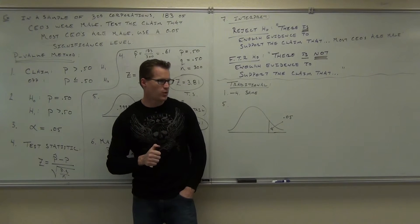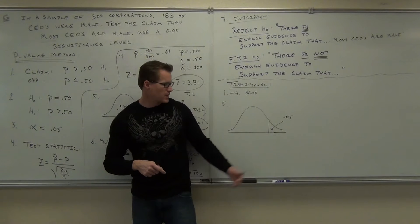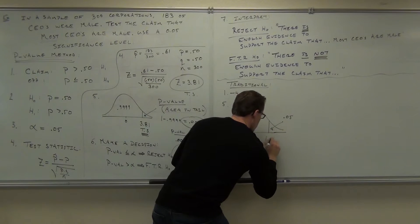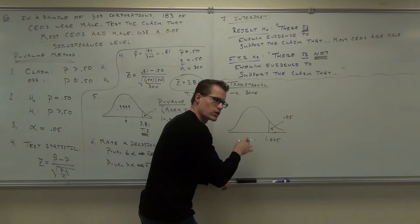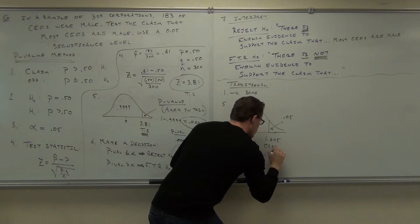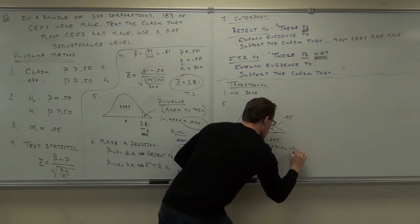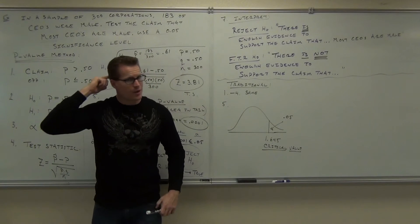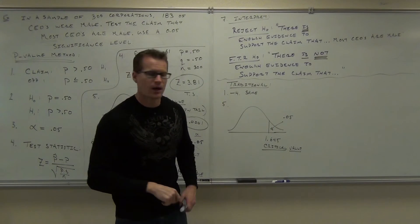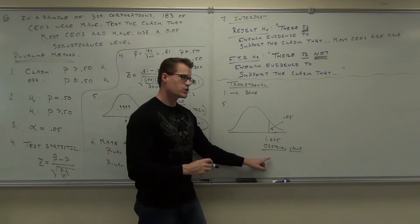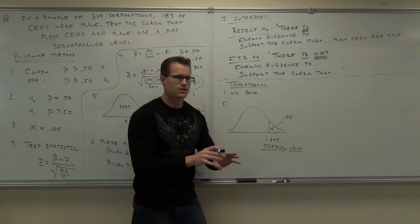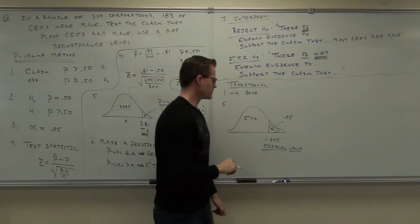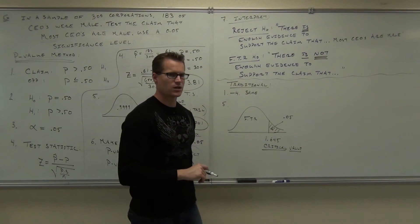This is not a test statistic — this is a critical value. With the traditional method, you're going to have something called a rejection region and a fail-to-reject region. This critical value is the number that separates those two things. The rejection region is the area in the tail. So to the left of the critical value is the fail-to-reject region, and to the right is the rejection region. If your test statistic falls in the fail-to-reject region, you don't reject; if it falls in the rejection region, you do reject.